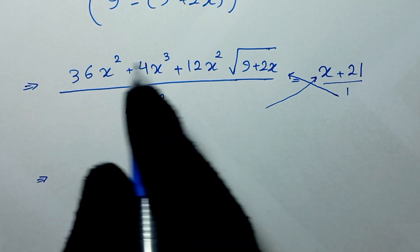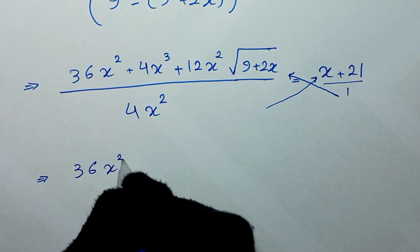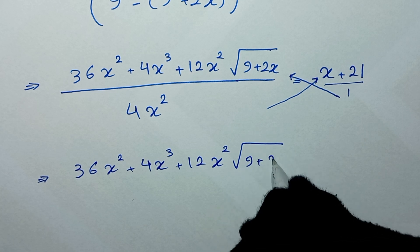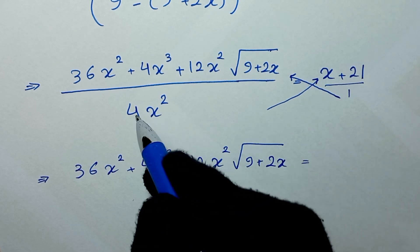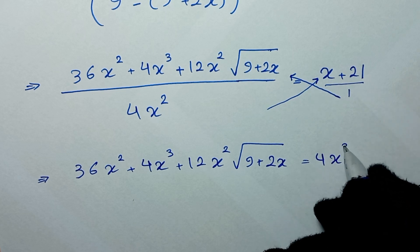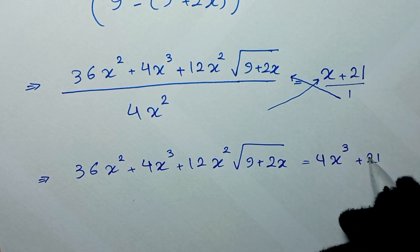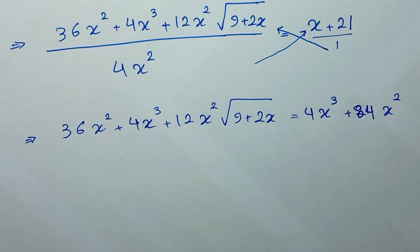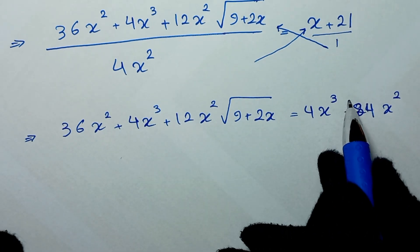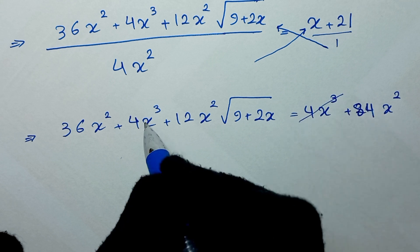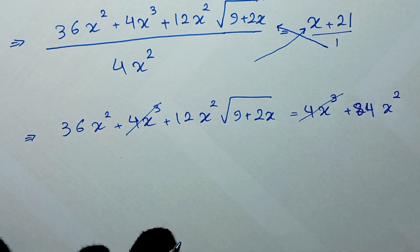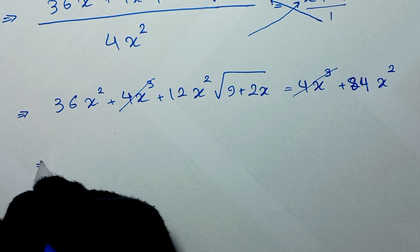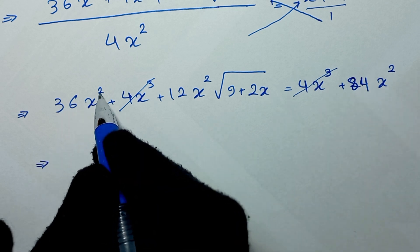After cross multiplication: 1 times the numerator gives 36x² plus 4x³ plus 12x² square root of (9 plus 2x). Bringing the 36x² terms together on one side: 84x² minus 36x² gives 48x².